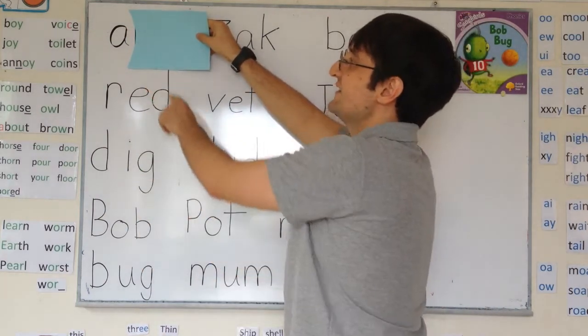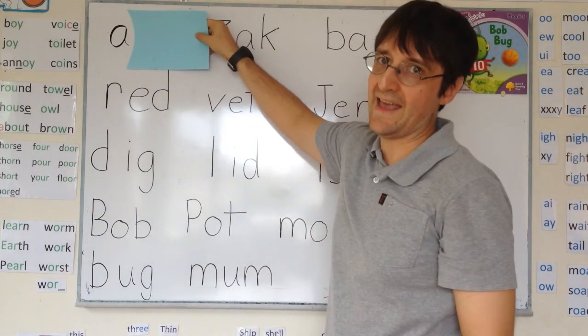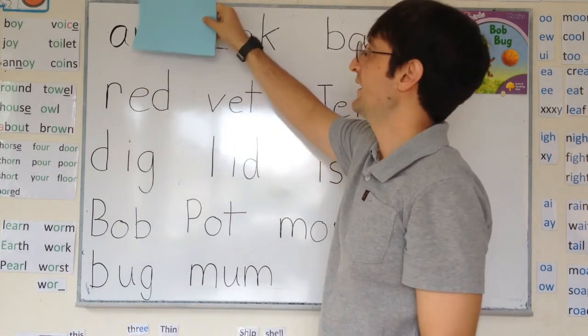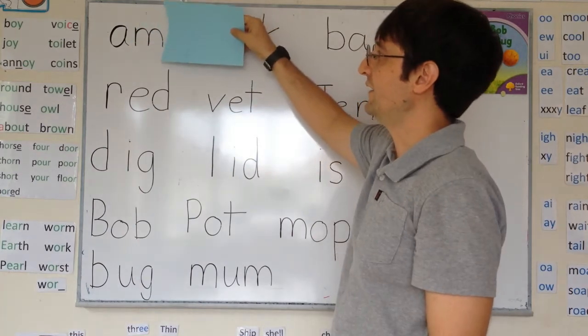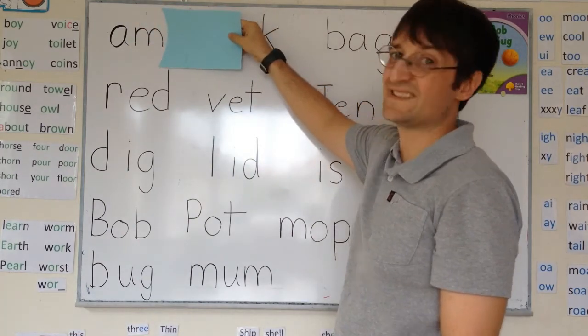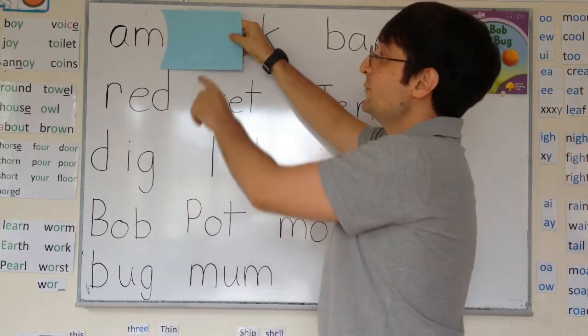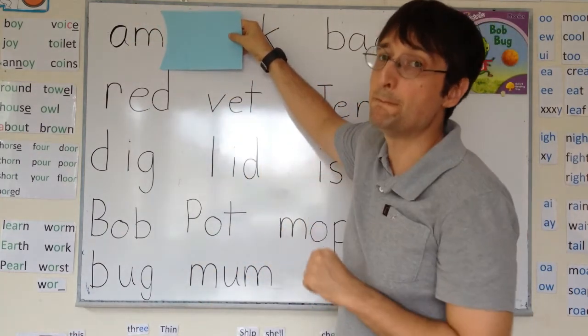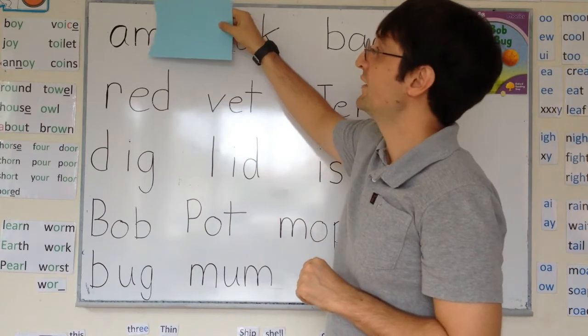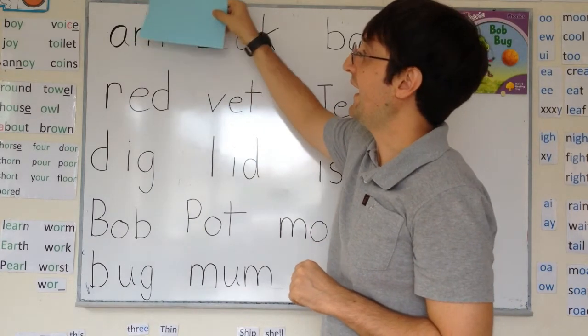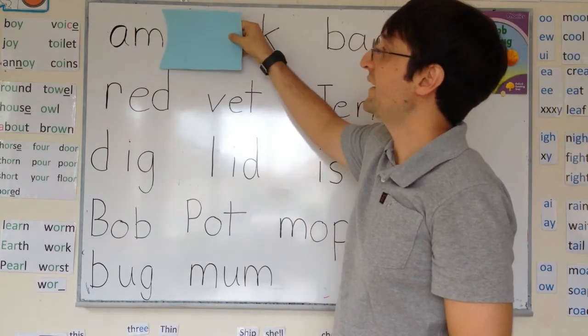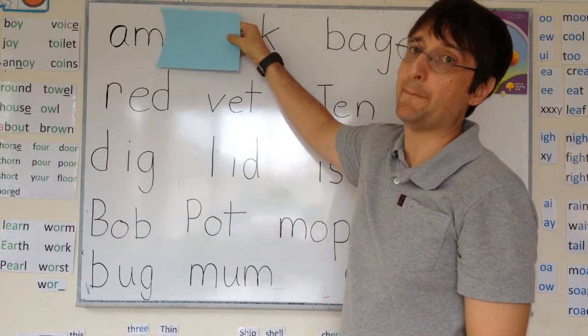So A says A. Then we reveal the second letter, and M says M. So A and M is M.